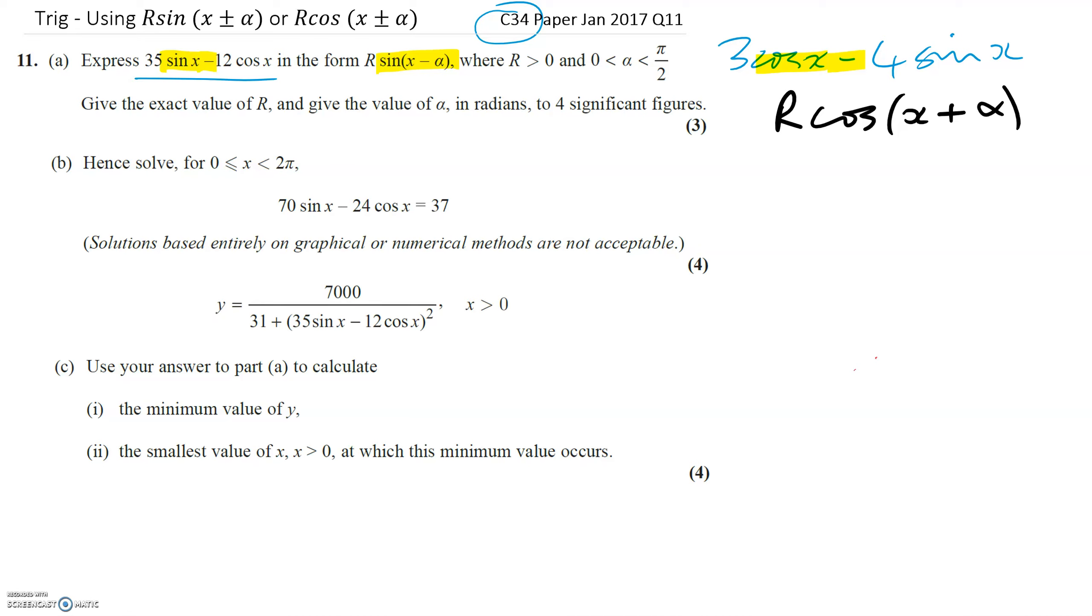If it's a plus as the other example on the previous video had, if it's a plus here, then it doesn't matter which of the two you use, you could use R sine X plus alpha, or it should also work if you do R cos X minus alpha. But it's always easier to use the one with the pluses in, I think, so I would just use that one, unless you're specifically told to use this one.